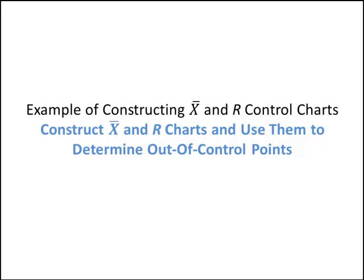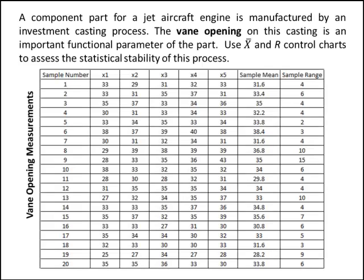In this video, you'll learn how to construct x-bar and R control charts. And then once we construct them, we'll use them to determine if there's any out-of-control points on the process that we're studying. A component part for a jet aircraft engine is manufactured by an investment casting process. The vane opening on this casting is an important functional parameter of the part. We'll use x-bar and R control charts to assess the statistical stability of the process.